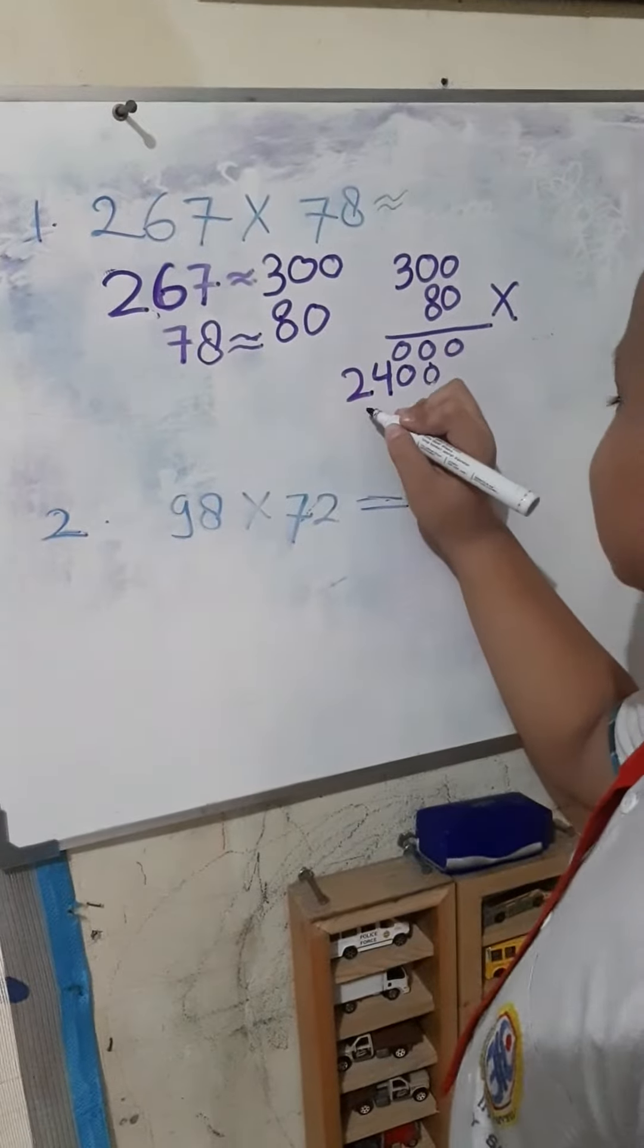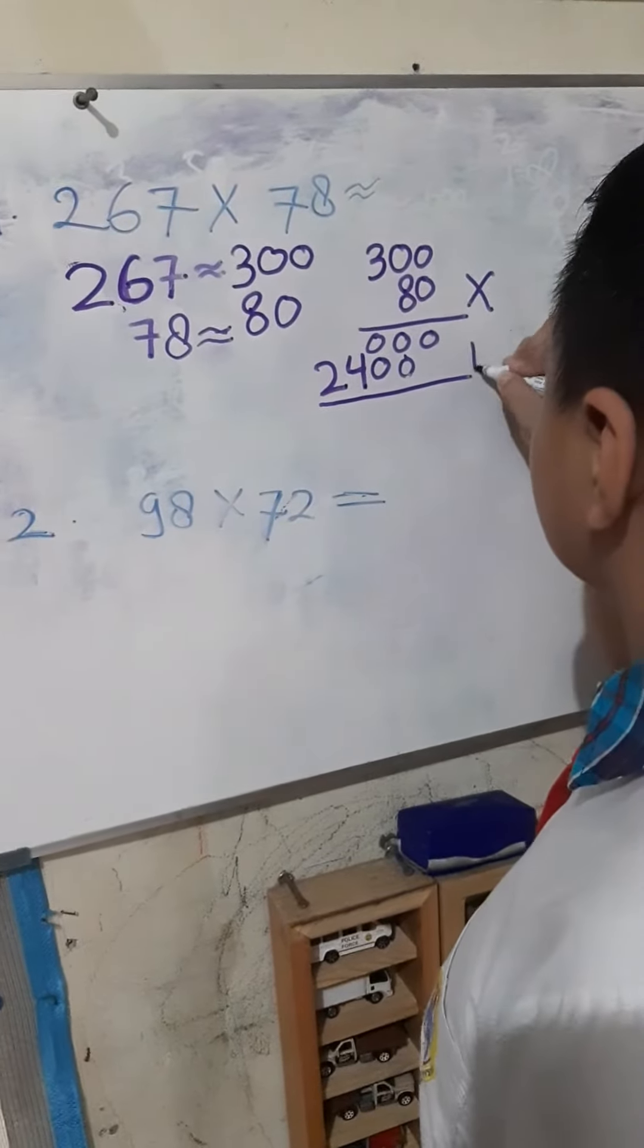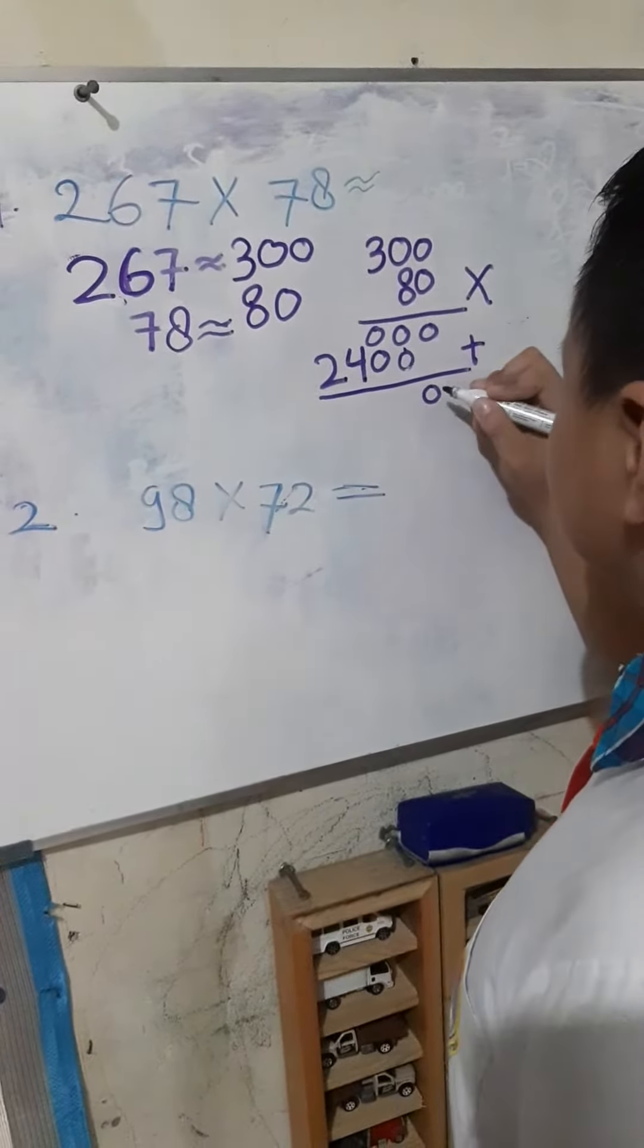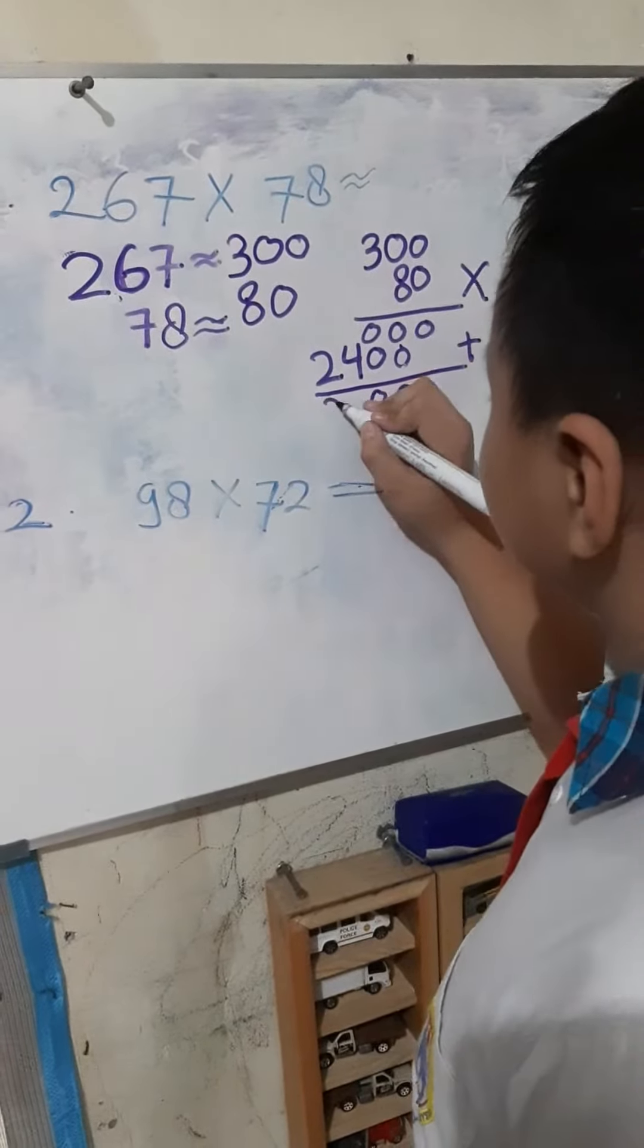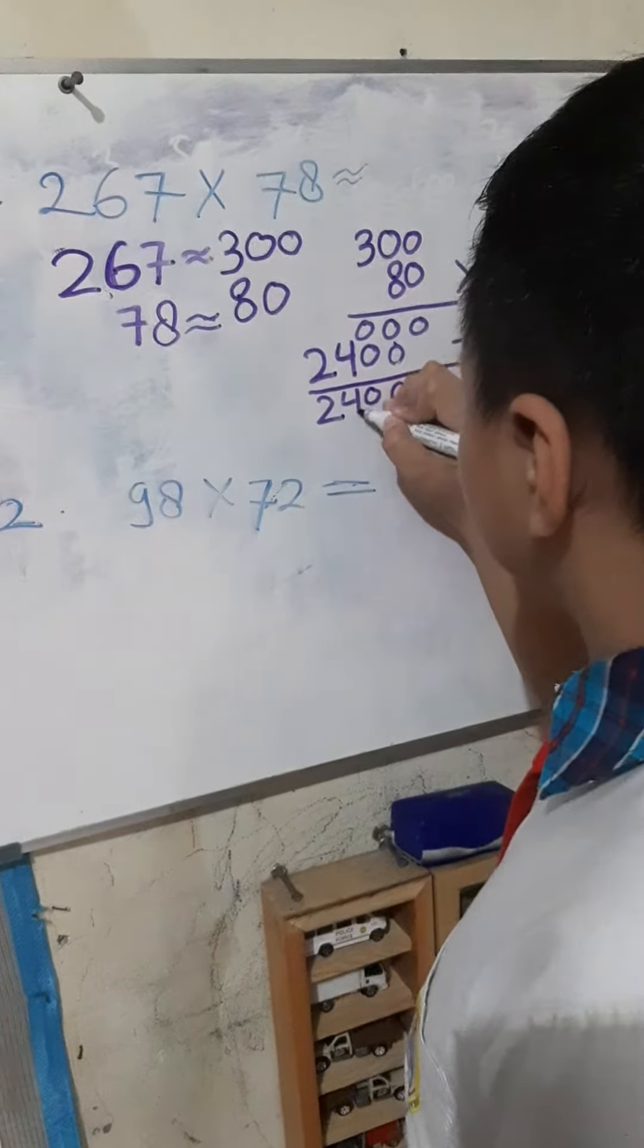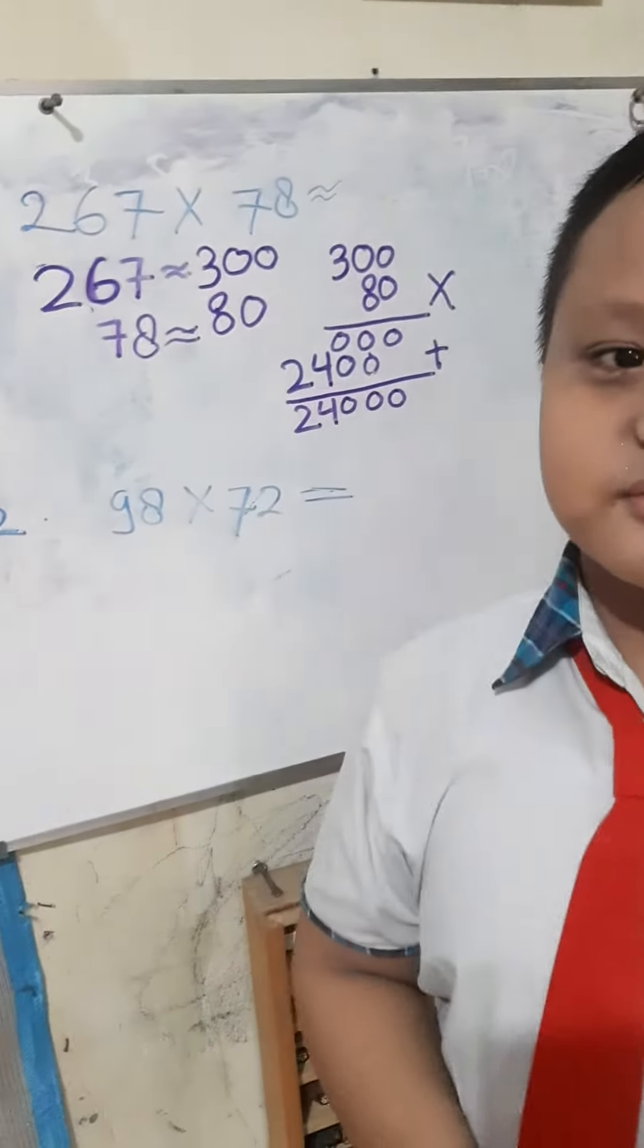Then we plus. 0 plus 0 equals 0. 0 plus 0 equals 0. The answer is 24,000.